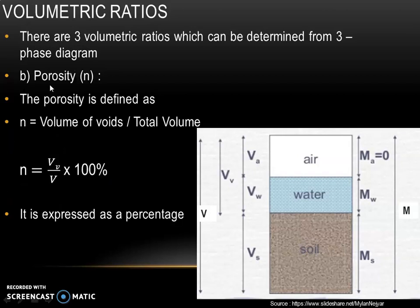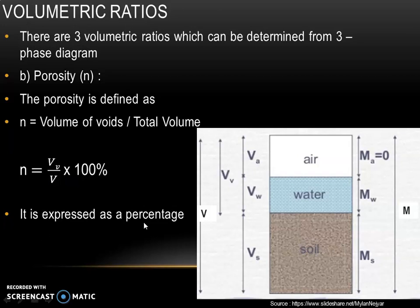The next volumetric ratio is porosity, which is denoted by the letter N. It is defined as the ratio of volume of voids to total volume. Referring to the three-phase diagram, the volume of voids is represented by VV and total volume of the soil mass is represented as V. So porosity N is equal to VV divided by V, multiplied by 100 percent. Hence, it is expressed as a percentage.